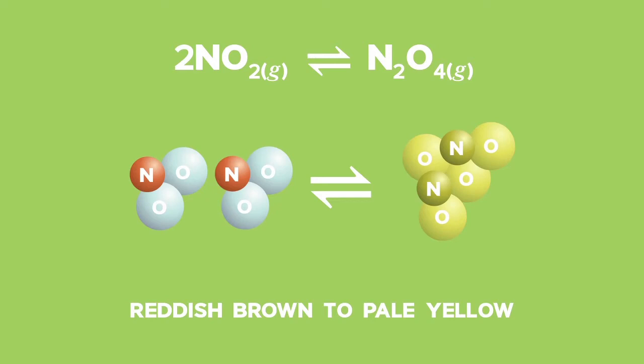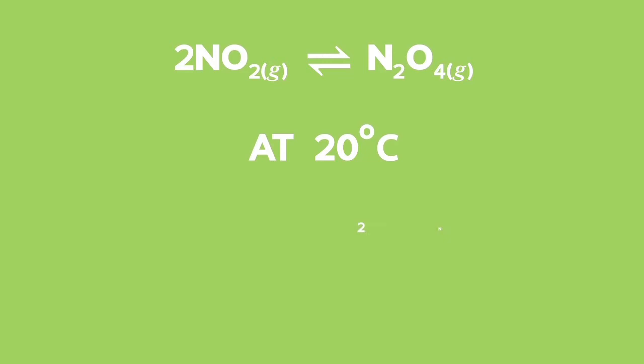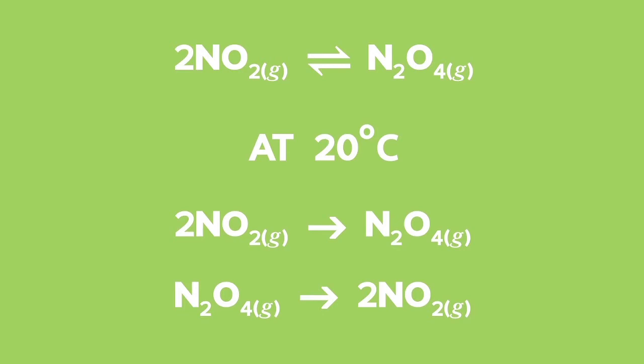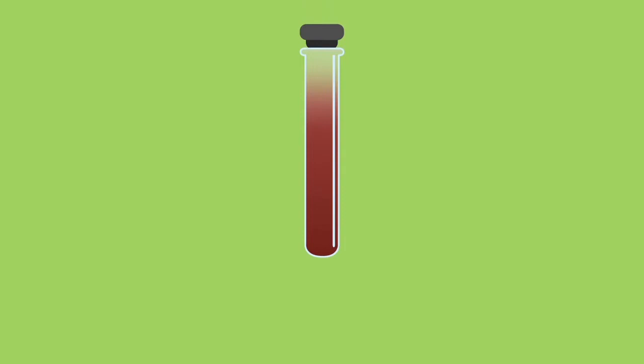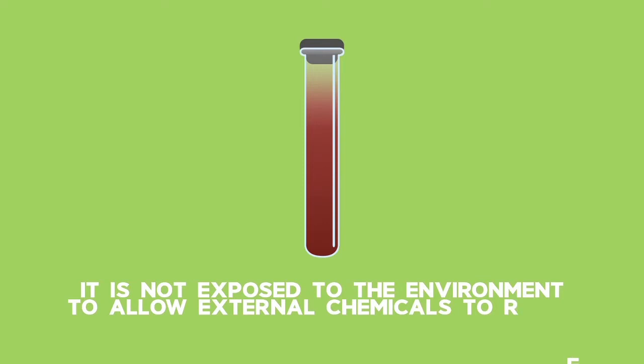At 20 degrees Celsius, two molecules of the gas NO₂ can react to form one molecule of another gas, N₂O₄, but this gas in turn is not very stable and can dissociate at 20 degrees Celsius into two molecules of NO₂. We say that this reaction is reversible, indicated by the two small arrows shown. In order to maintain a state of dynamic equilibrium, the system must be closed — not exposed to the environment to allow external chemicals to react.